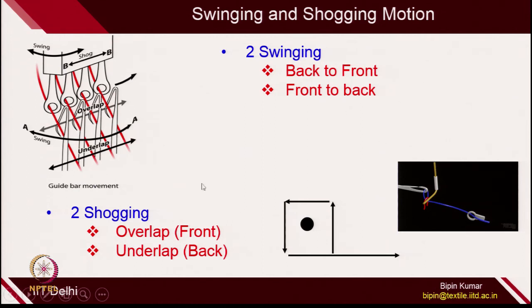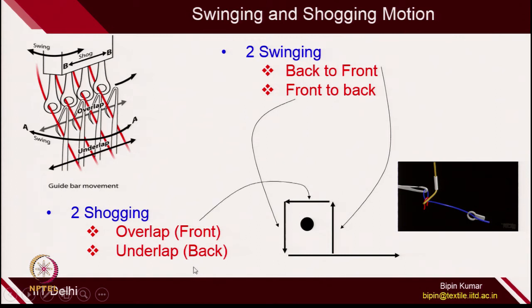This is the swinging and sogging motion which I explained in the first lecture of this week. There are 2 swinging motions: one from the back side of the needle to the front side, and the other from front to back side. And there are 2 sogging motions: one on the front side of the needle and the other on the back side. For any course development, each needle performs these 4 motions, and those 4 motions can be explained by simple numbers.